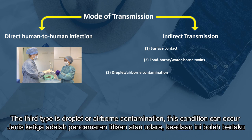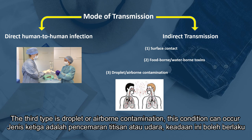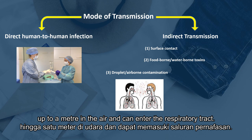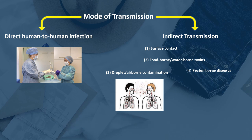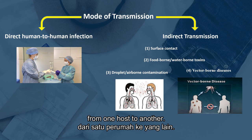The third type of indirect transmission is droplet or airborne contamination. This condition can occur from human or environmental sources, as droplets can travel up to a meter in the air and enter the respiratory tract. The last type is vector-borne diseases. A vector is an organism that carries disease-causing microorganisms from one host to another.